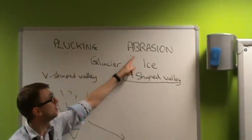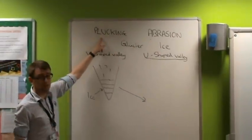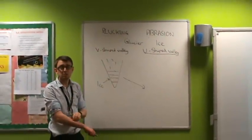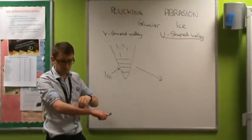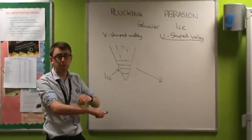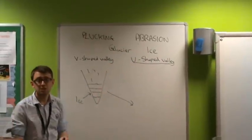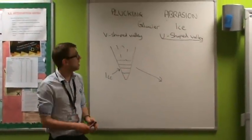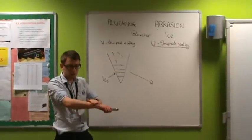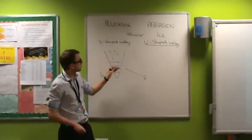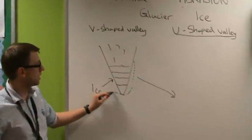These processes are plucking and abrasion. Plucking is where rocks get stuck to the bottom of the ice and are literally plucked from the ground. Abrasion is our sandpaper effect — as the ice moves along, it wears down the rock, starting to create the U-shaped valley and wearing down the sides of the V-shaped valley.